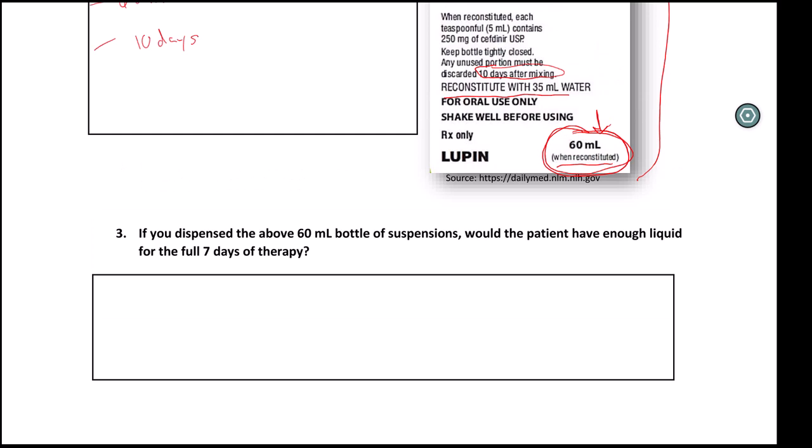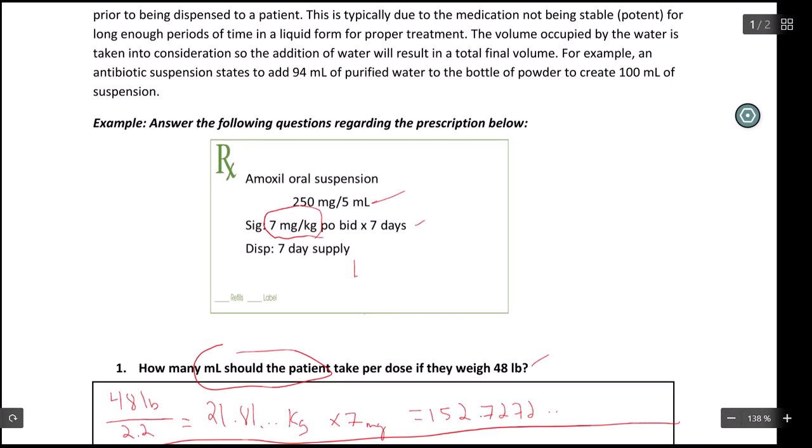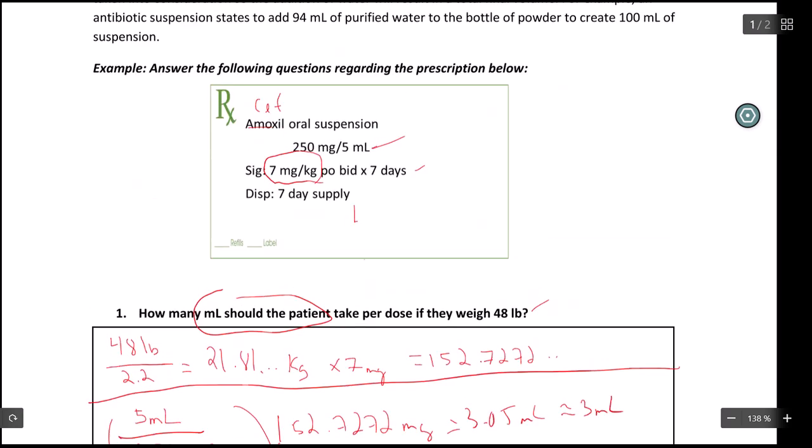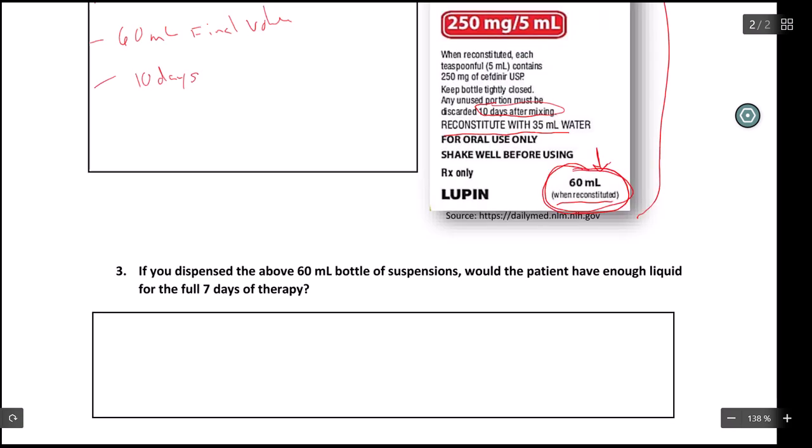The other one says if we dispense the 60 mL bottle of suspension, will the patient have enough liquid for the full seven days of therapy? Even though this is amoxil, if we were to say that this was cefdinir, we're going to say that it was that drug. So if it was that drug, and we gave a 60 mL bottle, would we have enough to actually do it?